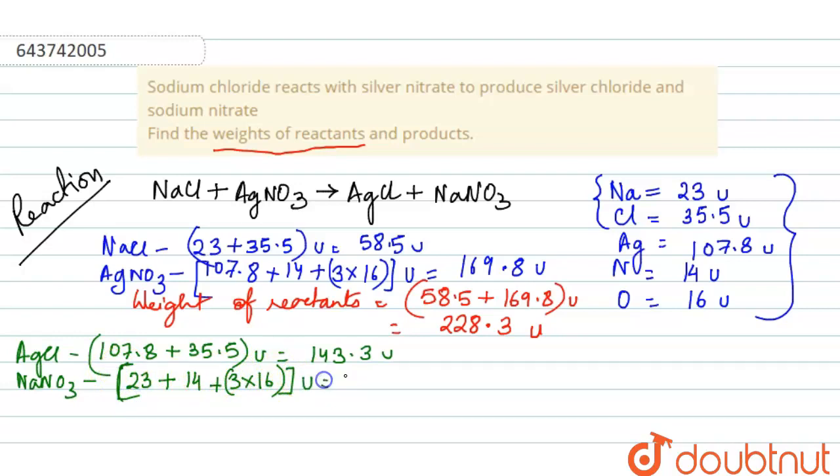And NaNO3 will have 23 for sodium plus 14 for nitrogen plus 3 into 16 for oxygen, which equals to 85 atomic mass unit. So weight of products: